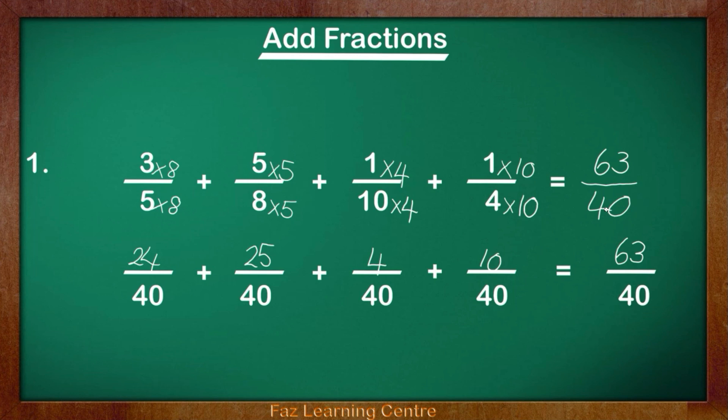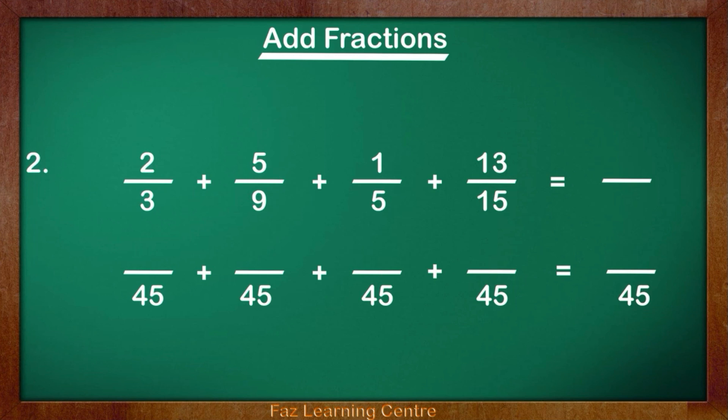Let's go to the next question. In this question we have 4 fractions. We have 4 unlike denominators. 3, 9, 5, and 15. We need to find a number that all of these can go into, and that is 45. 3 times what equals 45? 3 times 15 equals 45.